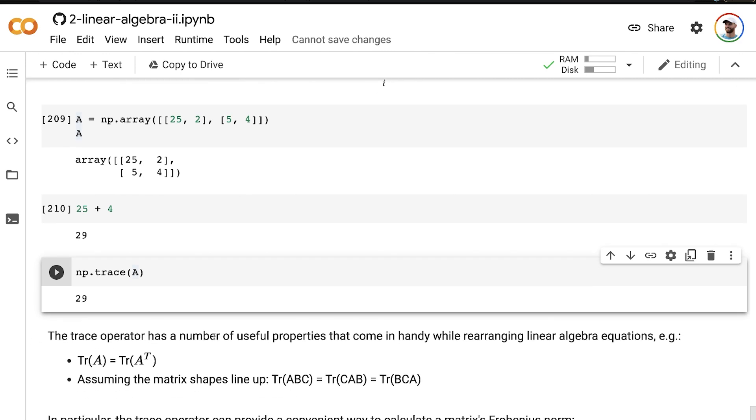So the trace operator has a number of useful properties that come in handy while rearranging linear algebra equations. For example, the trace of A is equal to the trace of A transpose, and this should be pretty obvious just from looking at this. If you were to transpose this matrix A, the main diagonal stays the same, and so the trace of A or A transpose is 29.